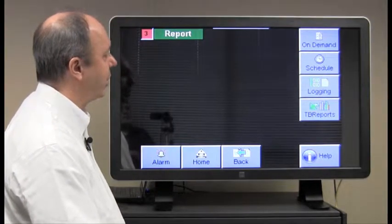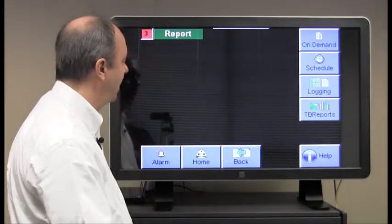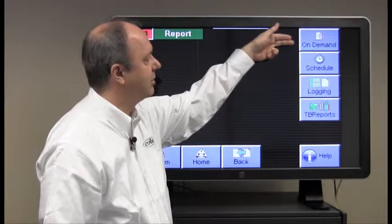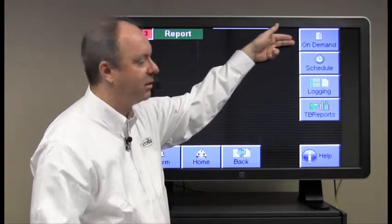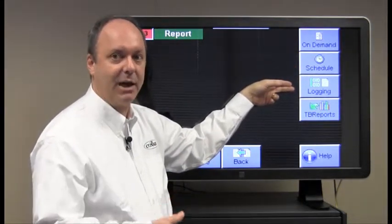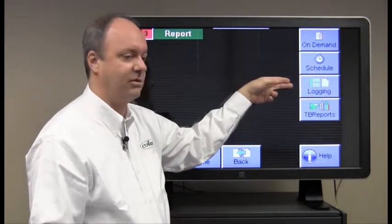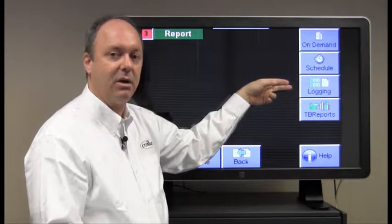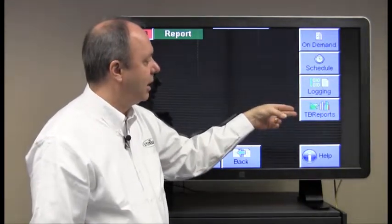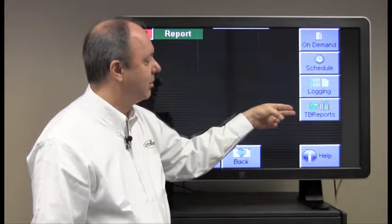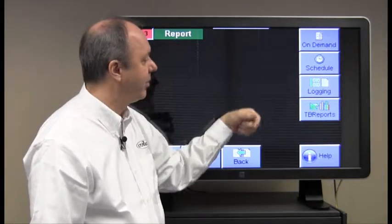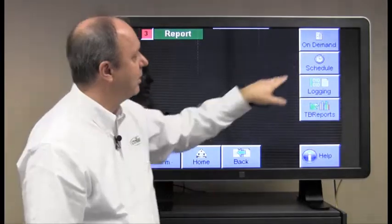We have four different methods for creating reports. The first one is on demand, which allows us to generate a report immediately. The second one is to schedule a report. The third one is to log data about the batch blender to a destination, such as a compact flash card located in the blender, or a USB thumb drive that you can plug into the blender. And the fourth method is to create reports out to a software package called TrueBlend Reports, created by Conair.